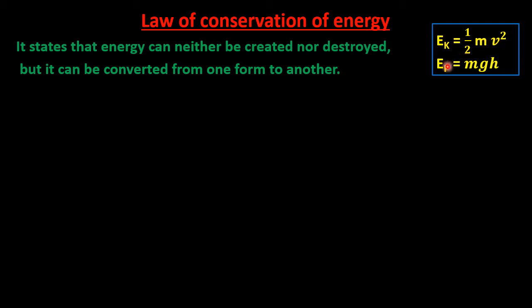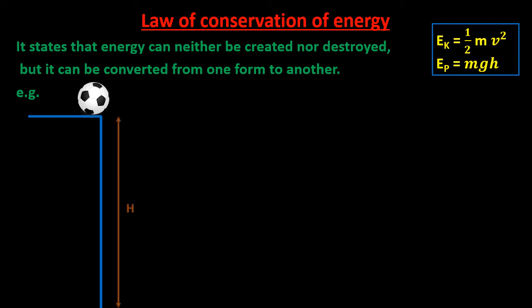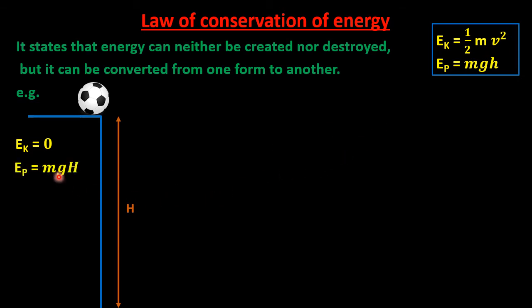Kinetic energy depends on mass and velocity; potential energy depends on mass, acceleration due to gravity, and height from the ground. In this activity, consider a ball which is at a height capital S from the ground. Initially the ball is at rest, so the velocity is 0. From the expression for kinetic energy, if velocity is 0 then kinetic energy is 0. So the ball has zero kinetic energy and the potential energy will be mgS.